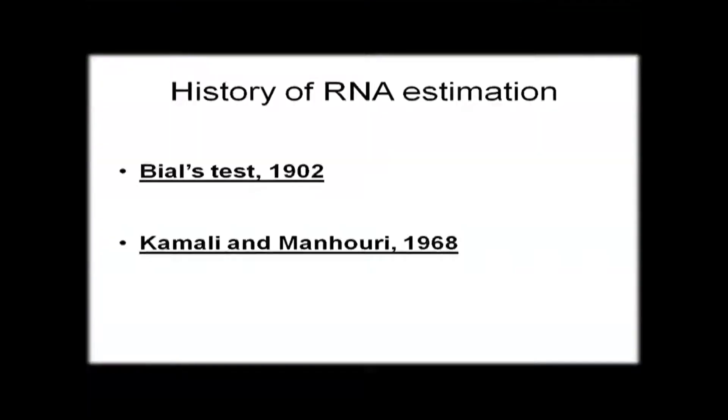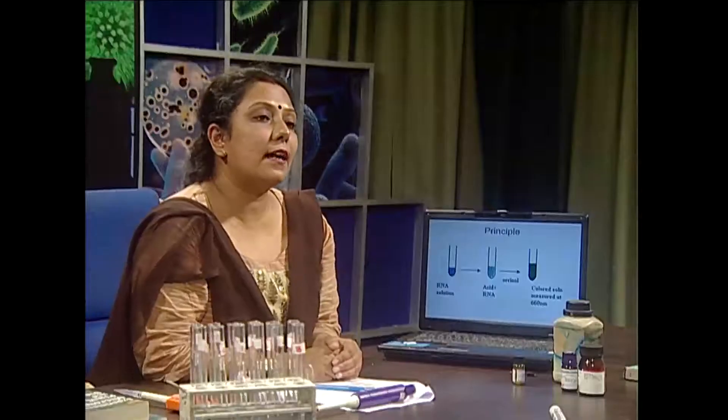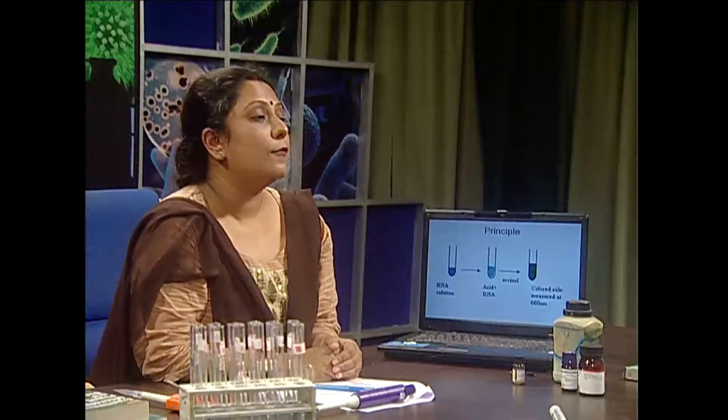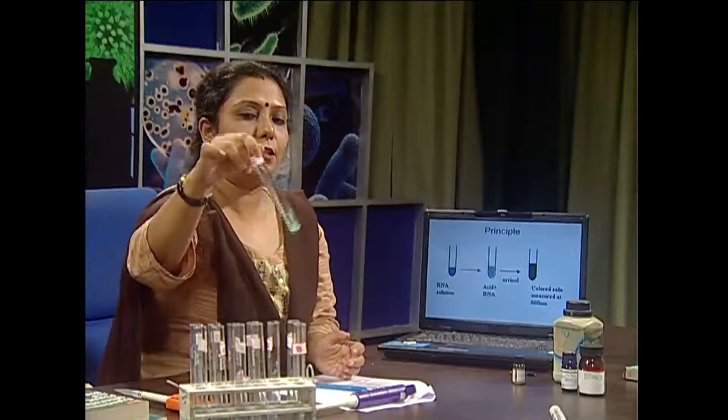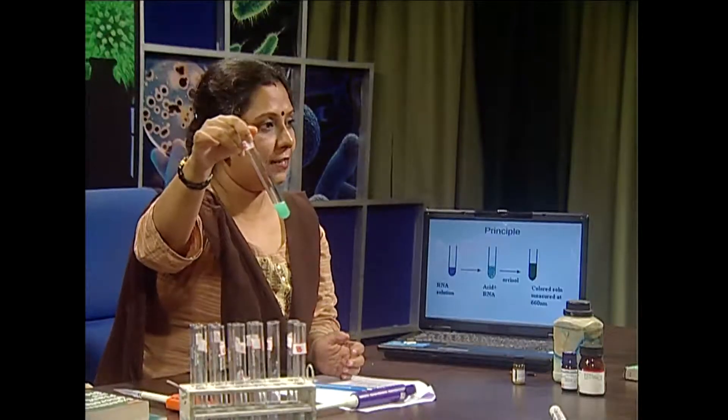But Kamali and Manhoori, in 1968, modified the method. Again, we are exploiting the property of ribose sugar. By acid hydrolysis, we are depurinating, dephosphorylating, and isolating only the ribose sugar. This particular ribose sugar is converted to a furfural derivative, which along with Orcinol produces a green coloration.